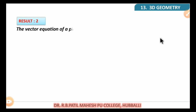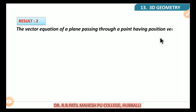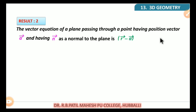Consider the result or the derivation: the vector equation of a plane passing through a point having position vector small a, and having n vector as normal to the plane, is (R minus a) dot n vector equals 0. This is the second derivation of equation of plane — a plane passing through a point and having normal vector n.